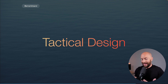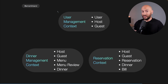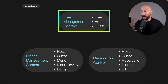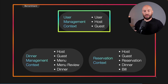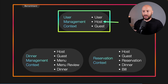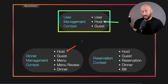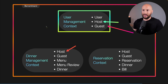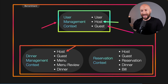Now let's talk about the tactical phase. In the solution space, it doesn't have to be a one-to-one mapping of the domains we found. For example, we could decide to create one bounded context where 'host' means one thing but contains elements from multiple problem space domains. These decisions reflect our priorities — for example, there may be an off-the-shelf solution for managing user profiles that can be delegated to an external system, while other parts we develop in-house. We have the freedom to make these decisions.